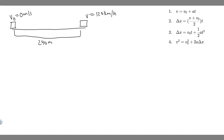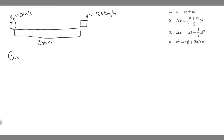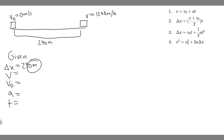We solve these problems using kinematic equations. The variables in those equations are Δx, v, v₀, a, and t. Let's determine which we have. Δx is the change in position — yes, that's 240 meters. v, the final velocity, is 120 kilometers per hour — that's the takeoff speed. v₀, the initial speed, is zero meters per second.